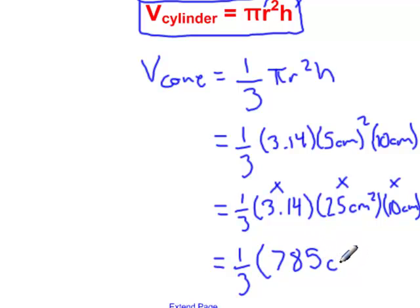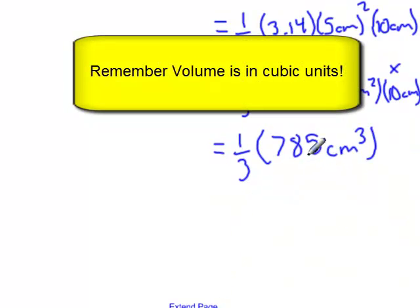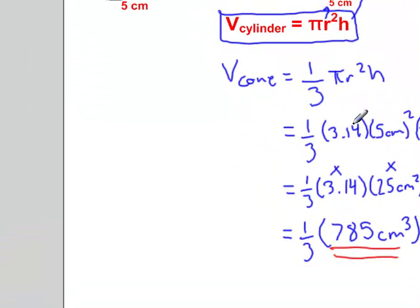And this is going to be in centimeters cubed. What we've just calculated right here, that's 785 centimeters cubed, is this portion of our original formula. So we've calculated the volume of the cylinder that contains this cone. And all that's left to do is divide this by 3.